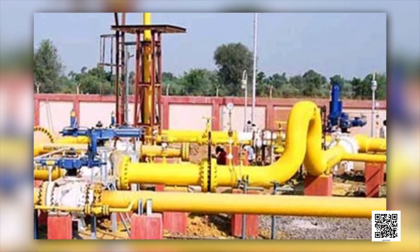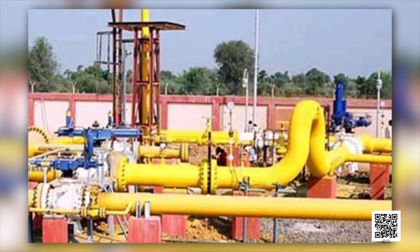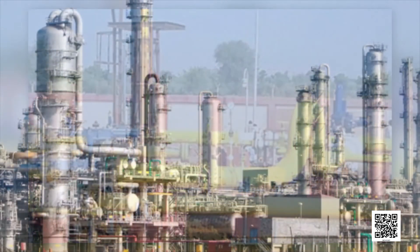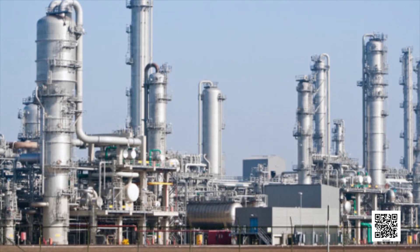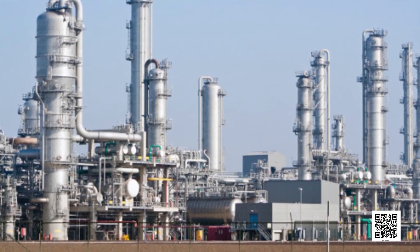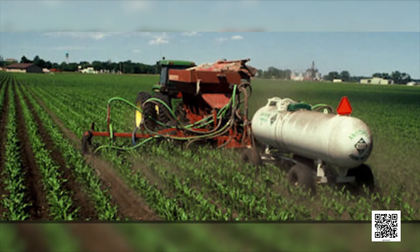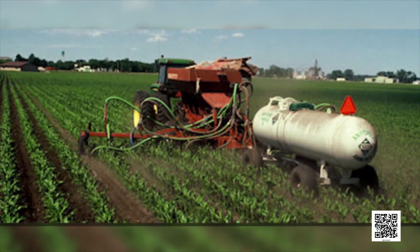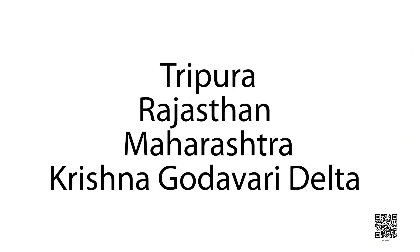Natural gas is also used as a starting material for the manufacture of a number of chemicals and fertilizers. India has vast reserves of natural gas. In our country, natural gas has been found in Tripura, Rajasthan, Maharashtra and in the Krishna Godavari Delta.